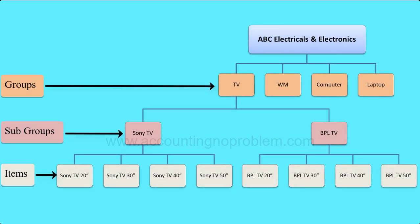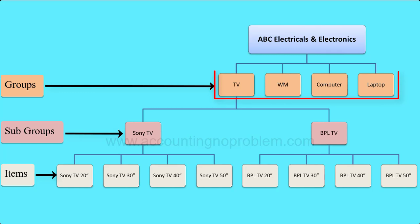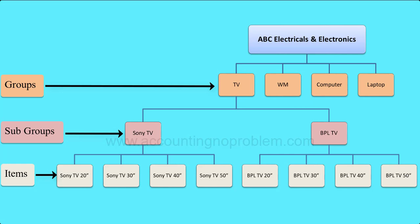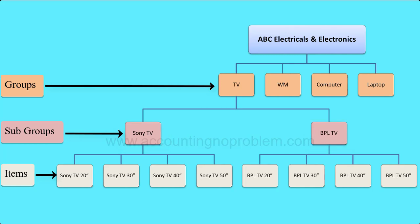इस chart में सबसे ऊपर ABC Electricals and Electronics लिखा है। इस showroom में क्या-क्या products हैं, वे दूसरी line में दिखाई पड़ रहे हैं। यहां समझाने के लिए इन सभी products में से सिर्फ TV के subgroups बनाकर दिखा रहे हैं। TV में किस-किस company के TV हैं, वो तीसरी line में दिखाई पड़ रहे हैं।